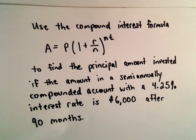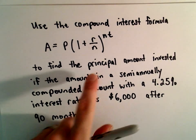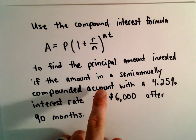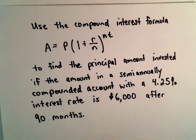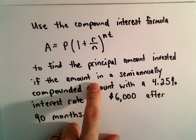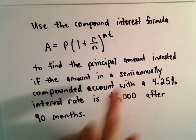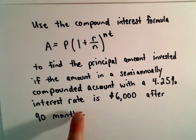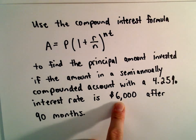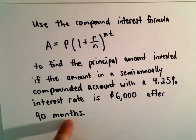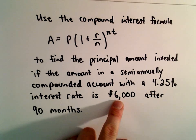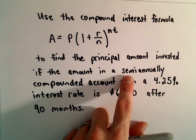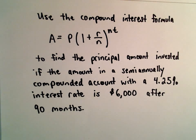Here we're going to use our compound interest formula to find the starting, or principal, amount invested. Suppose we know that the amount in a semi-annually compounded account with a 4.25% interest rate is $6,000 after 90 months. So you've accumulated a total of $6,000 after 90 months, compounded semi-annually at 4.25%.